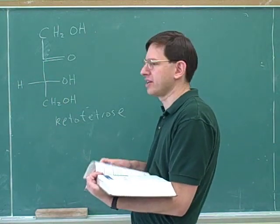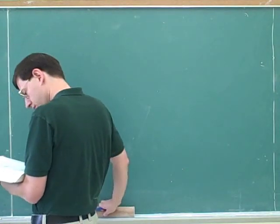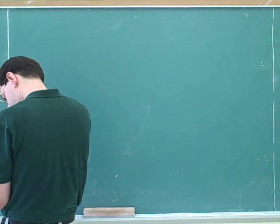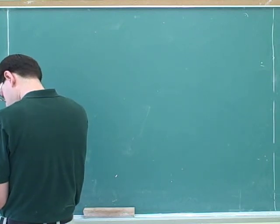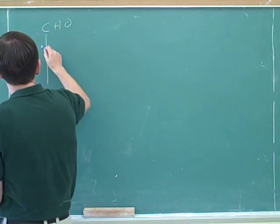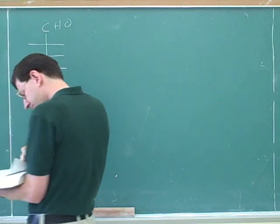All right, so the sugar is going to be based on either aldehydes or ketones. But the ketone has to be at the one next to the top, right? It can't just be perfect in the middle?